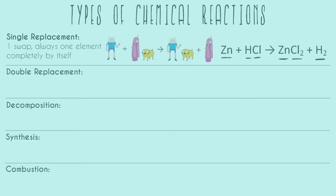In all of these reactions, the subscripts and however you balance them have nothing to do with the type of chemical reaction. The fact that in the products with chlorine there's two of them, and hydrogen used to just have one — don't worry about that at all. All you have to worry about is the actual elements themselves, by atomic symbol, not subscript.